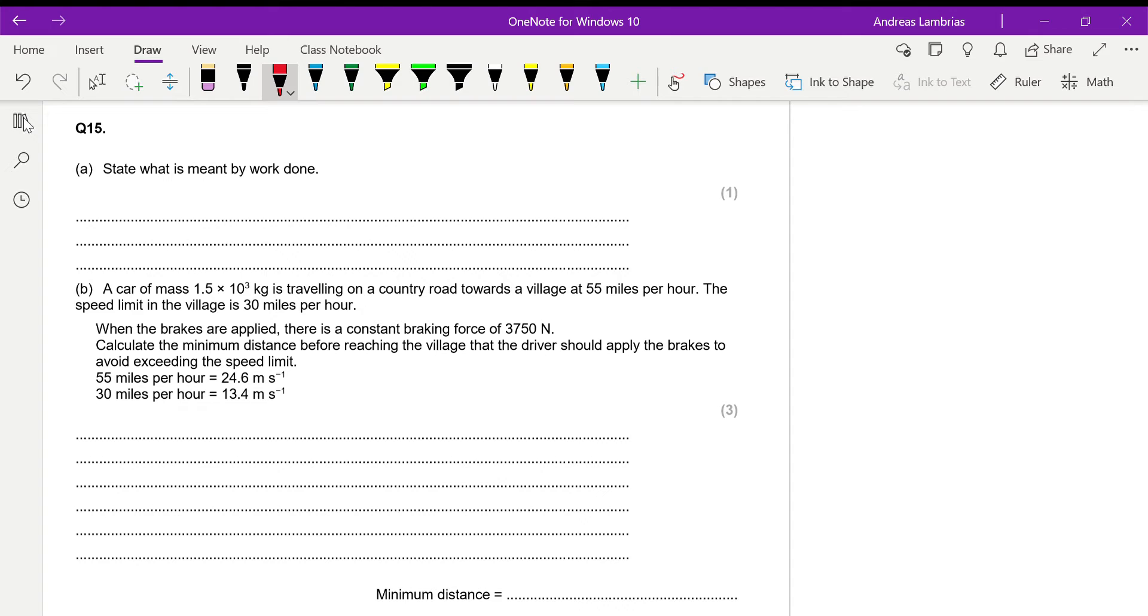In this question, first we have to state what is meant by work done. We know that work done is the energy transfer, and by definition the work done can be calculated by the force times the distance that this force is applied to, but it's the distance that is moved in the direction that the force is applied to. So force times distance moved in the direction of the force. It's very important to mention that it's in the specific direction.